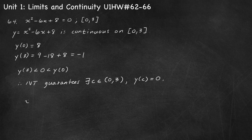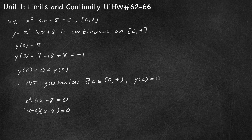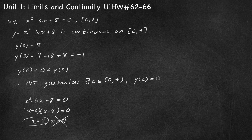Setting x squared minus 6x plus 8 equals 0 and factoring, we get x minus 2 times x minus 4. So x equals 2 and x equals 4 are solutions. However, the intermediate value theorem only guarantees a c between 0 and 3 — it does not guarantee the 4. x equals 4 is a zero, but it is not guaranteed by the intermediate value theorem. So the value of c we're looking for is just 2.